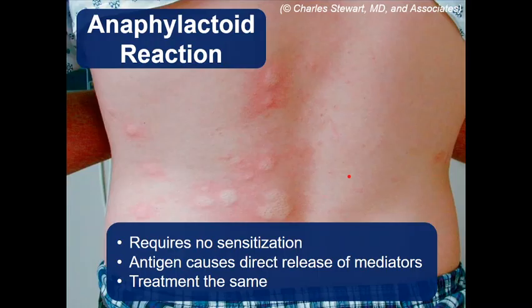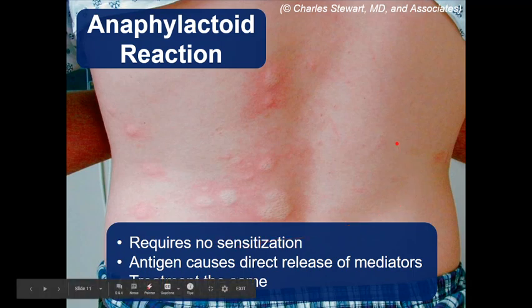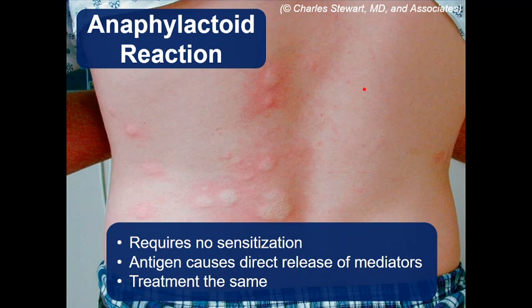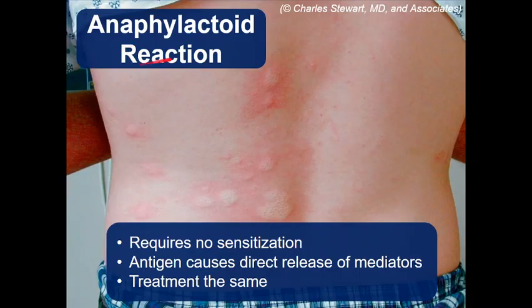Anaphylactoid refers to a reaction similar to anaphylaxis but doesn't require prior sensitization — the antigen itself causes histamine release directly. The treatment is the same: remove the allergen and consider epinephrine if they're shocky. Anaphylactoid reactions are often drug-induced and less common than classic allergen-triggered responses. This is medium-yield — you might get a question comparing anaphylactoid to anaphylaxis, where whatever enters the body directly causes histamine release, which is atypical.